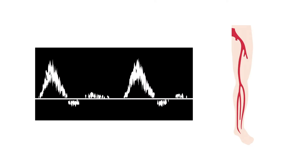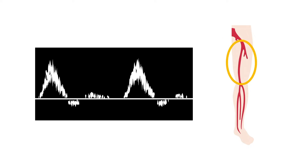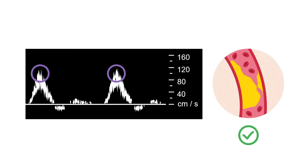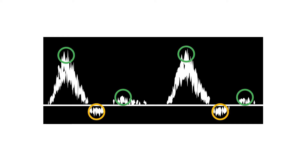Duplex waveforms are obtained segmentally throughout the leg and compared for degradation. They are correlated with velocities to confirm a stenosis. The concept of AVI Doppler phasicity, or peaks and pits, holds true for duplex waveforms.